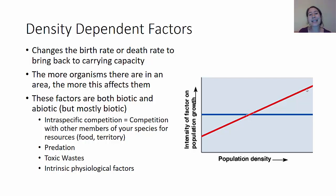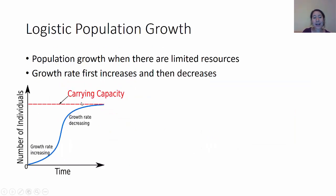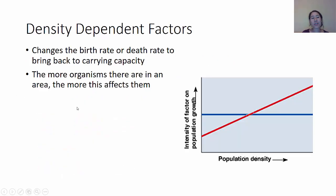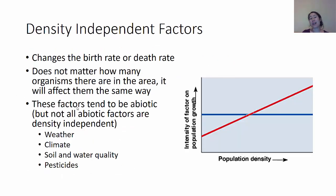Basically, density-dependent factors are what bring the population back to its carrying capacity. If it gets too high, density-dependent factors will bring it back down to around that carrying capacity. In contrast, density-independent factors can have a giant effect and might drop the population way below the carrying capacity, because they don't depend on how many organisms there are — they affect them all basically the same way.